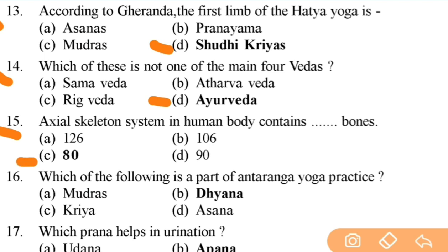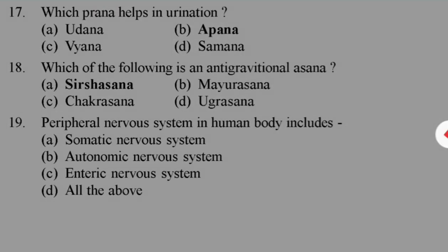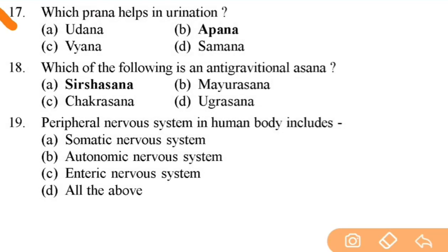Which of the following is a part of Antaranga yoga practice? Right answer is D — Dhyana — very important question. Next: which Prana helps in urination — very important — right answer is B — Apana Prana. Next: which of the following is an anti-gravitational asana? Right answer is A — Sirsasana.